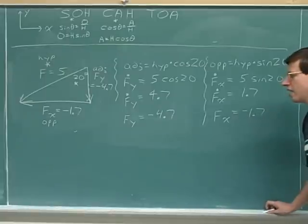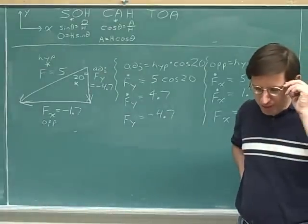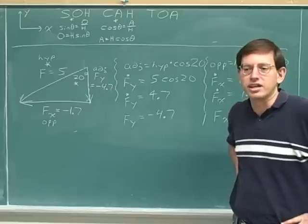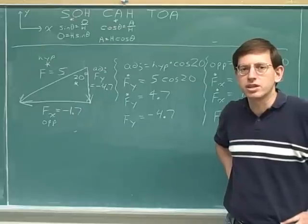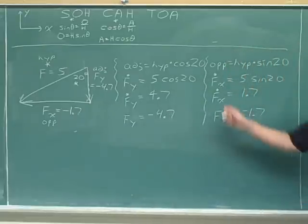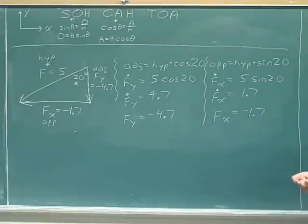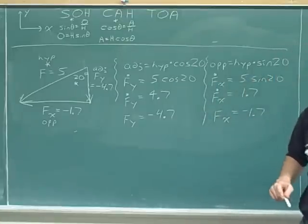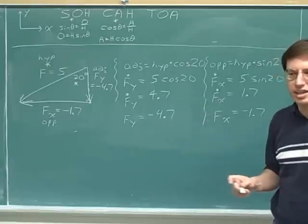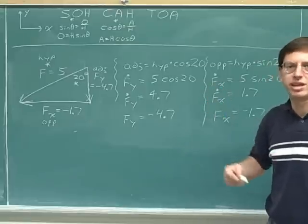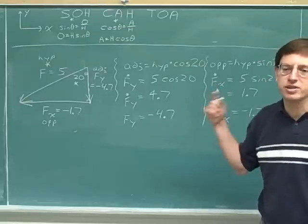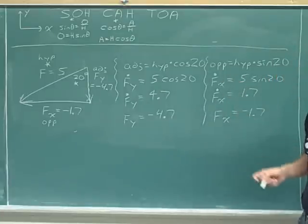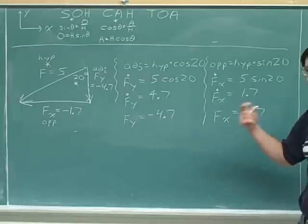This problem introduces a really important point. In previous examples, we always found the x component using the cosine. But here we found the x component using the sine. A lot of people start to think that x components always come from cosines — but that's not true. Usually you'll use cosine for x, but you will definitely see problems where you need the sine for the x component. You can't just memorize 'x means cosine'; you have to work out the right approach based on the details of each problem.